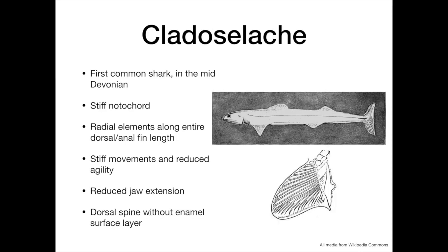Perhaps the most common of the early Paleozoic sharks was Cladoselache, found first in the Mid-Devonian. Whilst it was recognizably a shark, it differed from modern sharks in a number of ways. Firstly, as a vertebrate it had a notochord, but this notochord was stiff, unlike modern sharks, meaning that its movements were likely also stiff, despite being a strong swimmer.